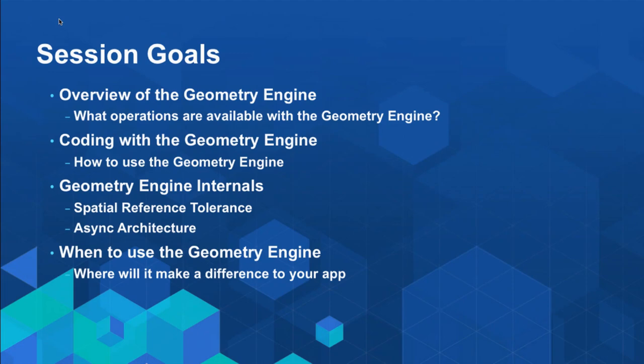I'm going to go over a quick overview of what we're going to talk about today. Geometry Engine is a big topic, so we want to hit on a lot of topics. We'll give an overview of what it is and what you have available, go through some code, how you use those methods in your apps, and then get a little deeper into the internals. We'll talk about the async architecture — there's a synchronous and an async version. We'll also close up by talking about when to use the Geometry Engine versus other methods, maybe Geometry Service or something else.